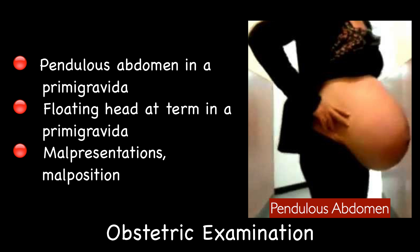The following findings on obstetric examination are pointers to contracted pelvis: pendulous abdomen in a primigravida, and floating head at term in a primigravida. In a primigravida with a contracted pelvis, the head cannot engage at 37 to 38 weeks and remains floating at term, thus falling forward giving the appearance of a pendulous abdomen. An important cause of malpresentations and malpositions is also contracted pelvis.